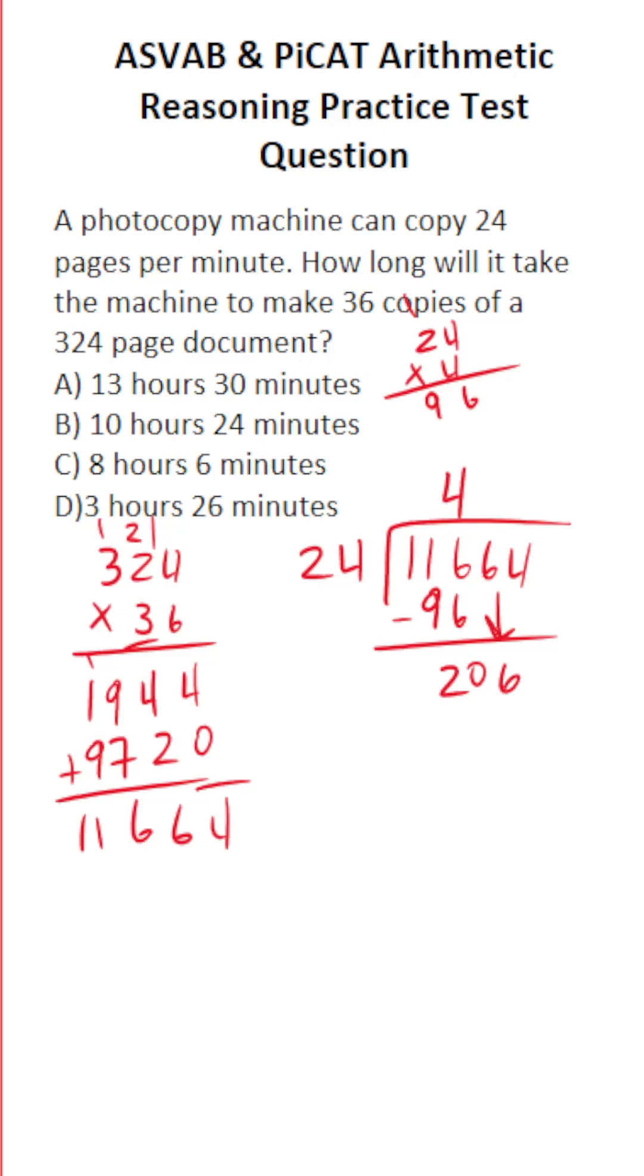How many times does 24 go into 206 without going over? Well, think of it like 25. 25 times 8 would be 200. So this has to be 8 times. And I'm going to do 24 times 8 off to the side so I don't make any mistakes.